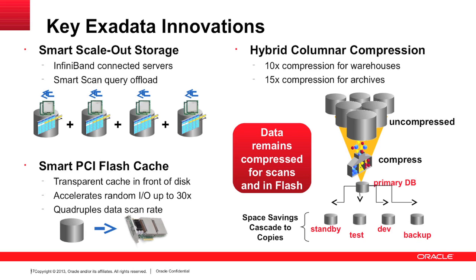Other clever things in the Exadata storage cells are the flash cache. They went from 384 gigabytes within the old X2 storage cells to 1.6 terabytes. Each Exadata storage cell has four flash cache cards. Each flash cache card on the old T4 X2 ones had 24-gig flash modules, four per card, so 16 in total. They've just upped them from 24 gig to 96 gig.